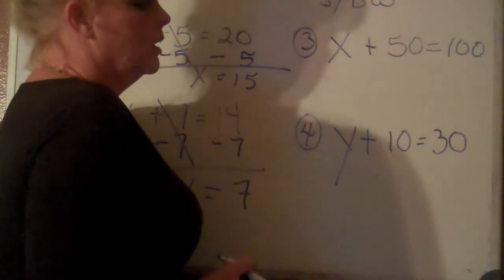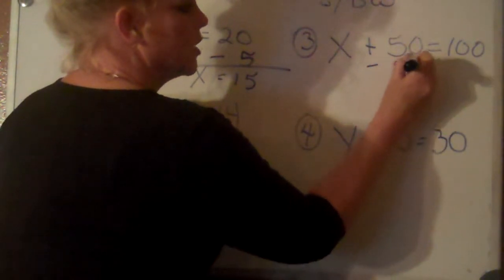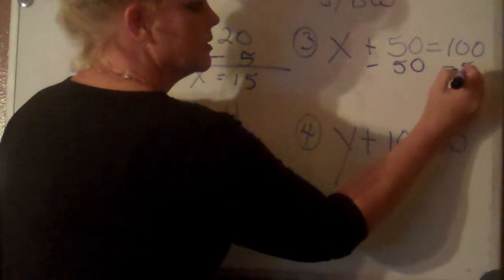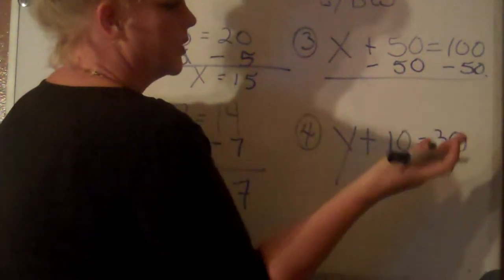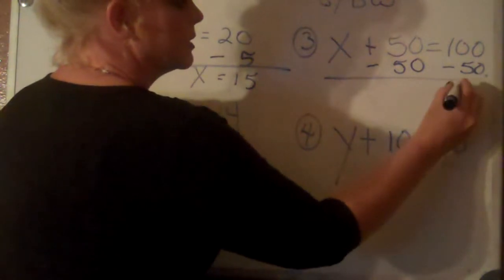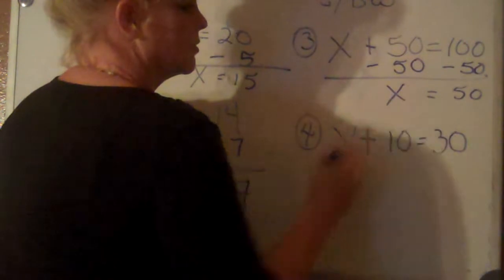Okay, x plus 50 equals 100. Well, same thing applies here. We're going to subtract 50 from both sides. And like I said, you can pause the video to make sure that you've done it right so that you can practice yourself. And of course, this is going to equal 50, and x equals 50.